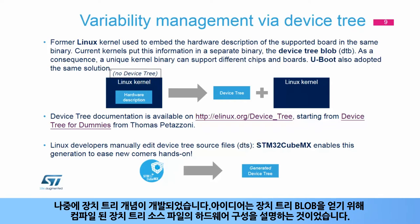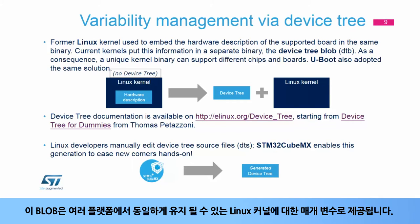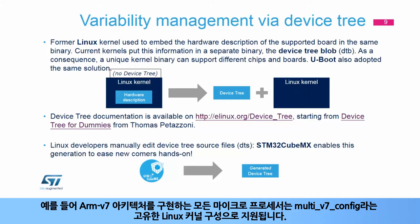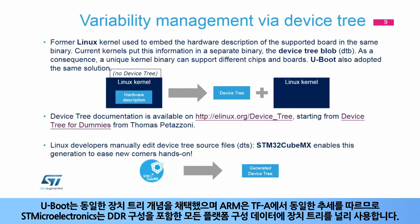The idea was to describe the hardware configuration in a device tree source file that is compiled to get a device tree blob. This blob is given as a parameter to the Linux kernel that can remain the same for multiple platforms. For instance, all microprocessors implementing ARMv7 architecture are supported with a unique Linux kernel configuration called MultiV7Config. U-Boot adopted the same device tree concept and ARM follows the same trend in TFA. So STMicroelectronics widely uses the device tree for all platform configuration data, including DDR configuration.